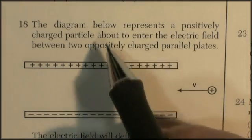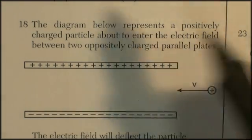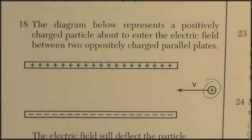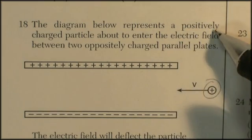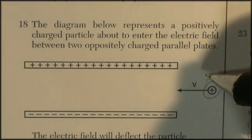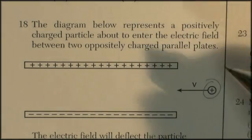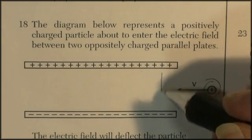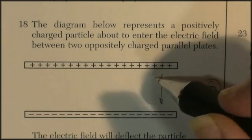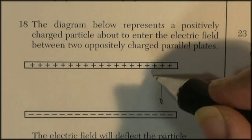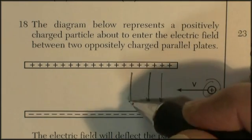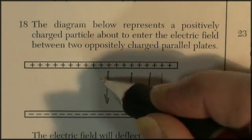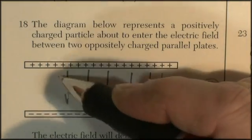Question 18. The diagram below represents a positively charged particle. This is positively charged. It's about to enter an electric field. Electric field between two oppositely charged plates. The electric field looks like this. By definition, we draw a field in the direction a positive test charge would move in, so it would be away from the positive, towards the negative.